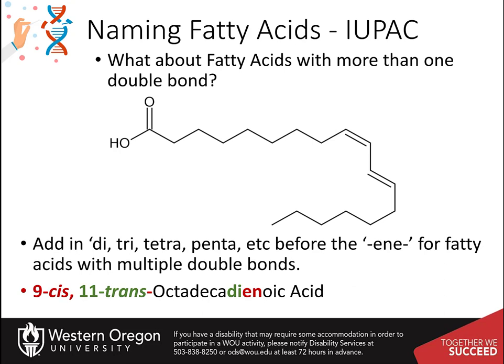For fatty acids with more than one double bond, you must indicate how many they have — not only in the numbering, but also in the main name. For example, dienoic is used for 2, trienoic for 3, tetraenoic for 4, and so on. For the fatty acid above, the double bond at position 9 is in the cis conformation and the double bond at position 11 is in the trans conformation. Thus the name is 9-cis, 11-trans octadecadienoic acid.